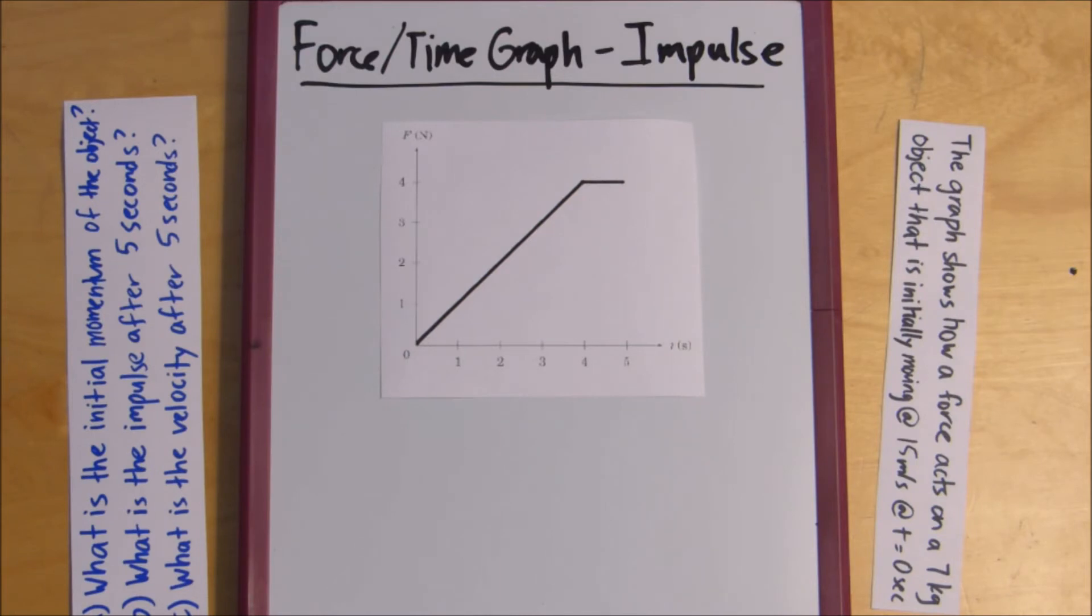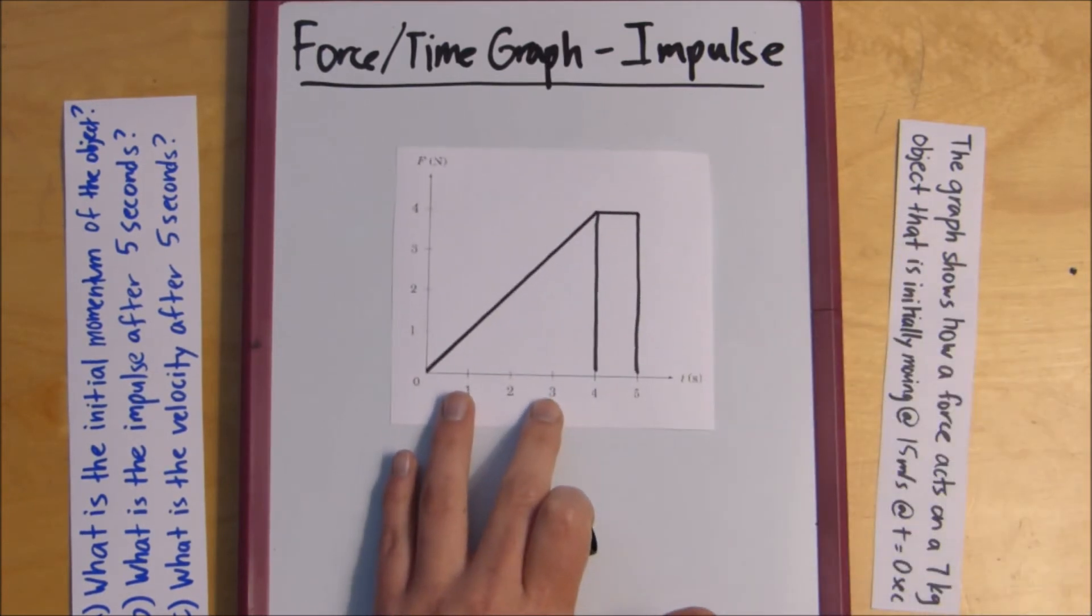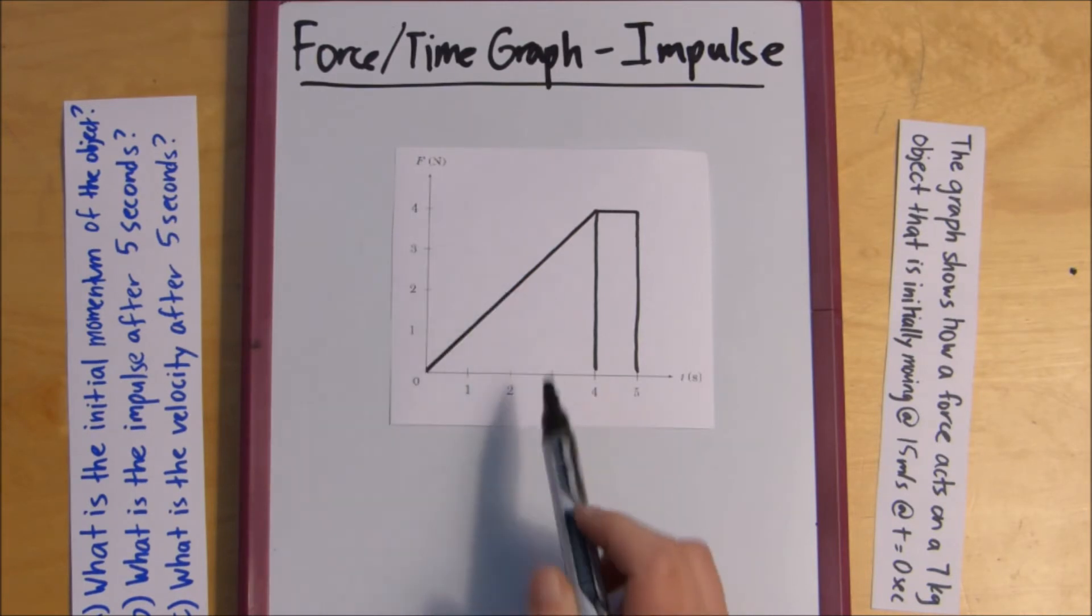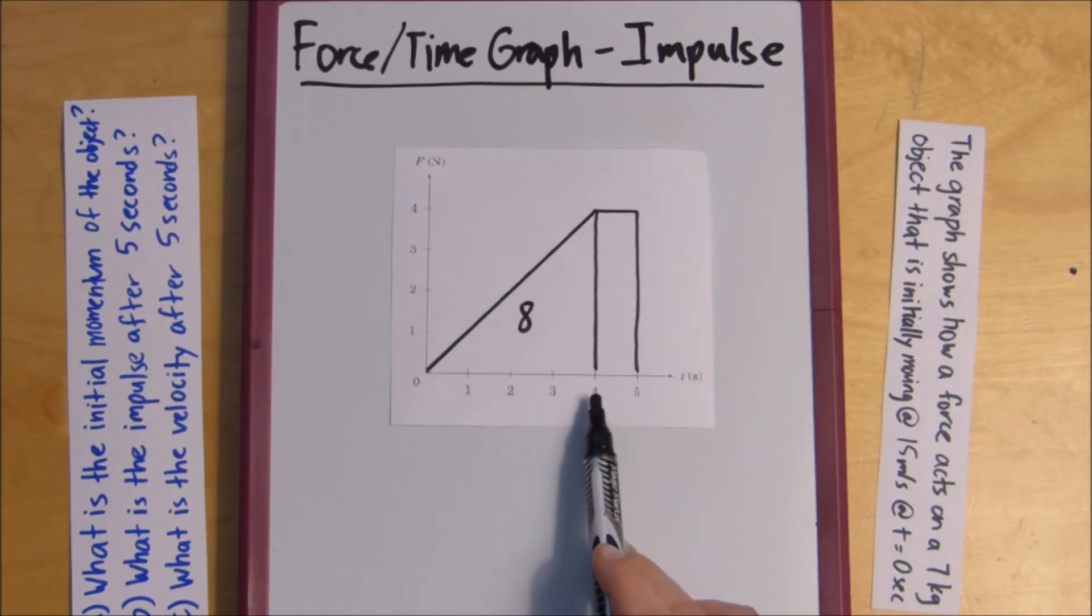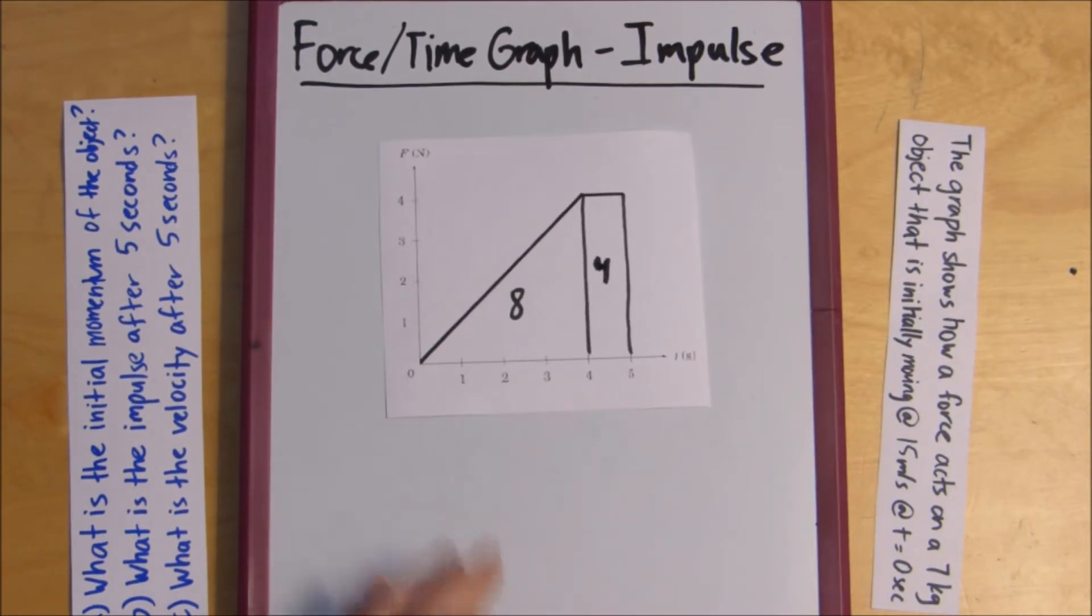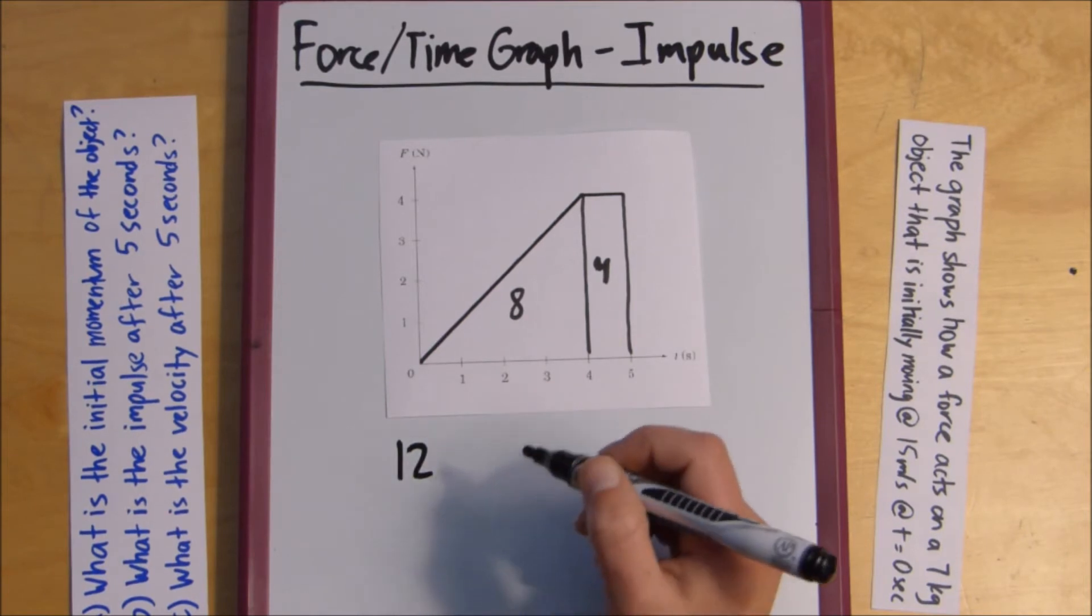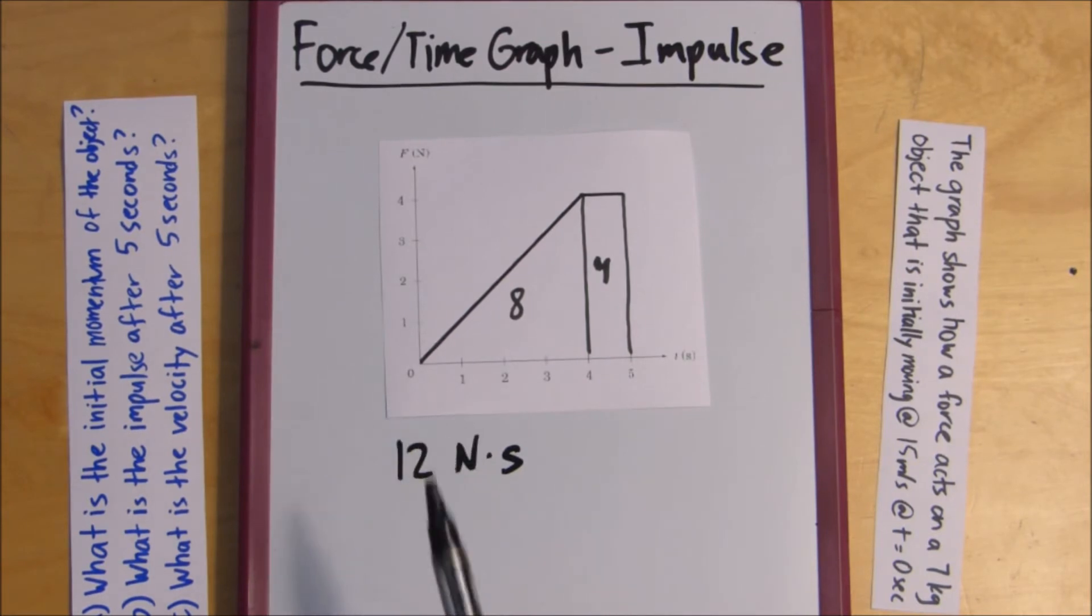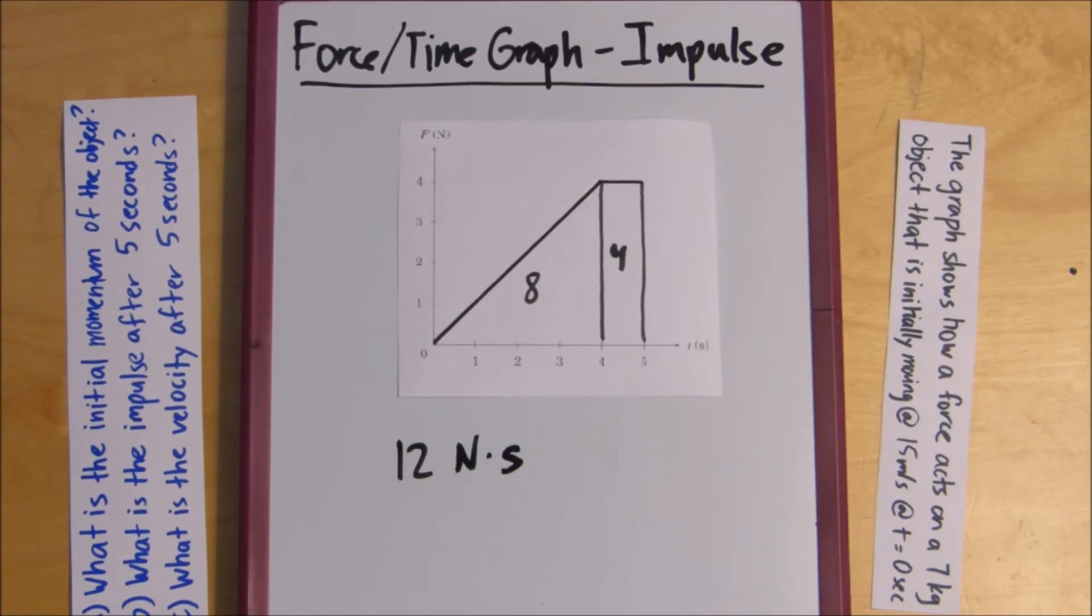So, here we can draw a triangle and a rectangle. So, here, our area would be 4, 4 times 4 times 1 half, because it's a triangle, so that would be 8, and then here we have 1 times 4, so 4. So, that means that 8 plus 4, 12 is our impulse, 12 newtons times seconds. That's the proper unit of measure for impulse when you're using force and time.